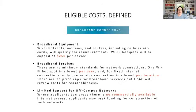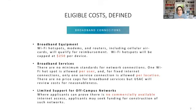For eligible costs: broadband connections, broadband equipment including Wi-Fi hotspots, modems, routers, and combination devices have a cap of $250 per device — that's for the equipment only, not the service. Some hotspots are typically $50–$60 while enterprise ones tend to be more expensive. The cap for that equipment is at $250.